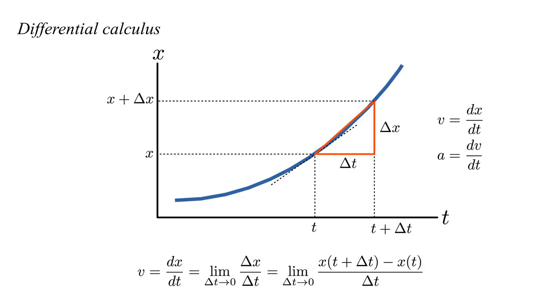We say that velocity is the derivative of position, and acceleration is the derivative of velocity. Acceleration tells us how fast velocity is changing, and velocity tells us how fast position is changing.